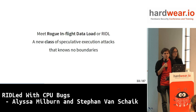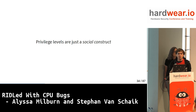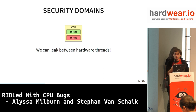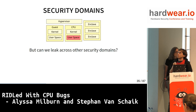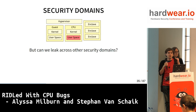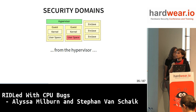Meet RIDL — ZombieLoad — or Riddle. Riddle is a new class of speculative execution attacks that knows no boundaries. Privilege levels — kernel, virtual machine — they're just a social construct. We showed you can leak between hardware threads, also known as Intel hyper-threading. But the question is: can we leak across any other security domains? In a typical CPU you have the kernel, user space, many VMs, a hypervisor managing those VMs, and secure enclaves that don't trust anything. The answer is yes. We can leak from the kernel, across VMs, even from the hypervisor, and from SGX enclaves — we leak across all security domains.